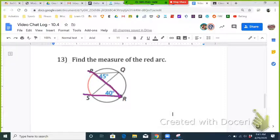Since this vertex is on the circle, it's going to be half the measure of the arc, so that makes the arc 80 degrees.